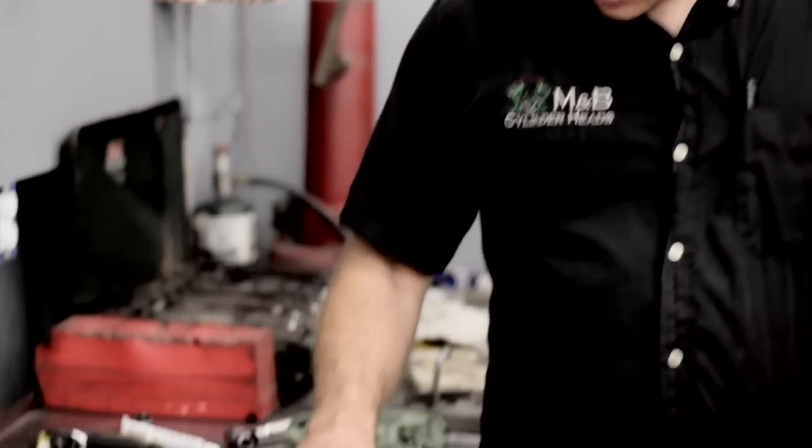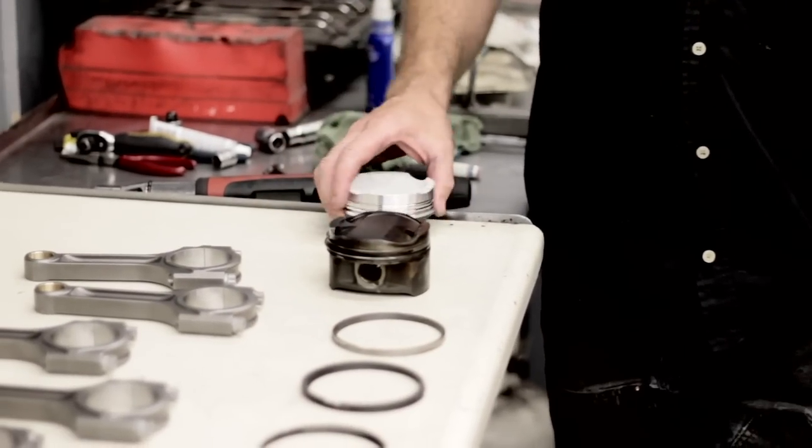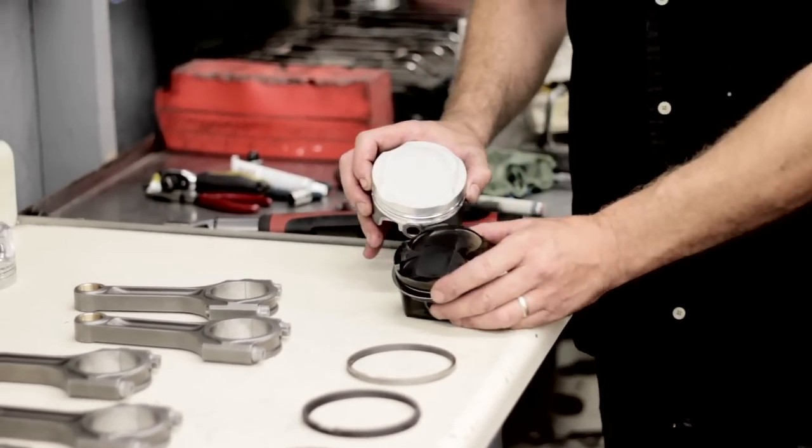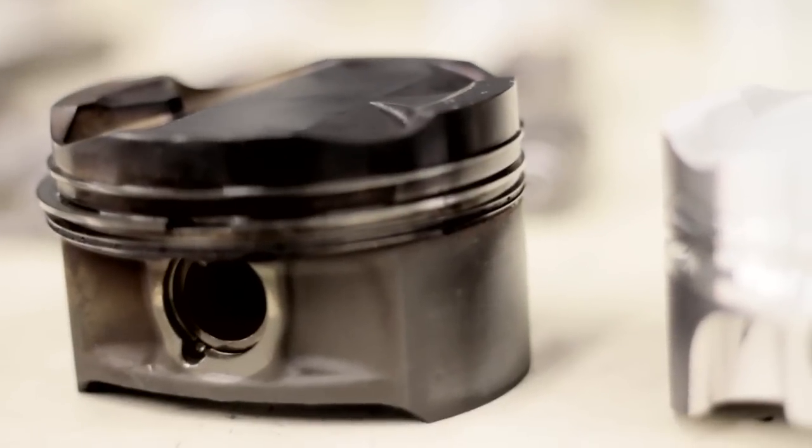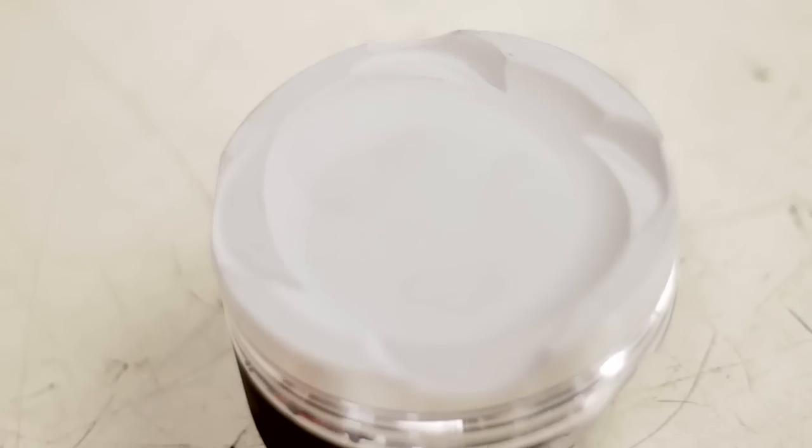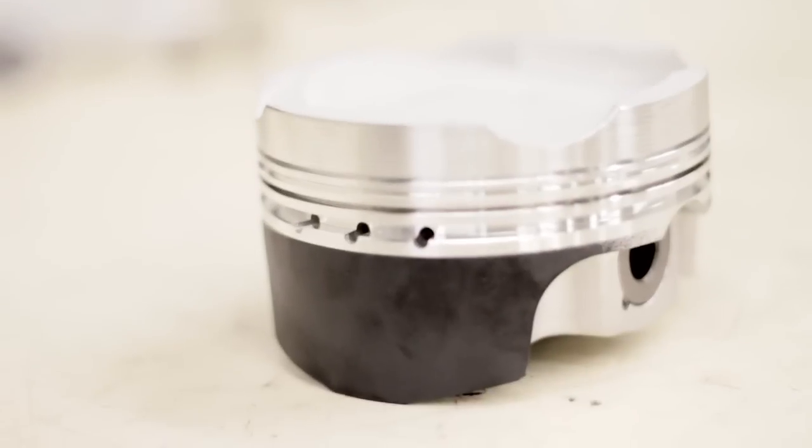Okay, so these are the pistons that came out of the engine we took apart earlier. It's a stock piston versus the aftermarket piston. It's got a lot more dish to it, the valve reliefs have been radiused, it's got a ceramic coated head, and it's got a coated skirt.